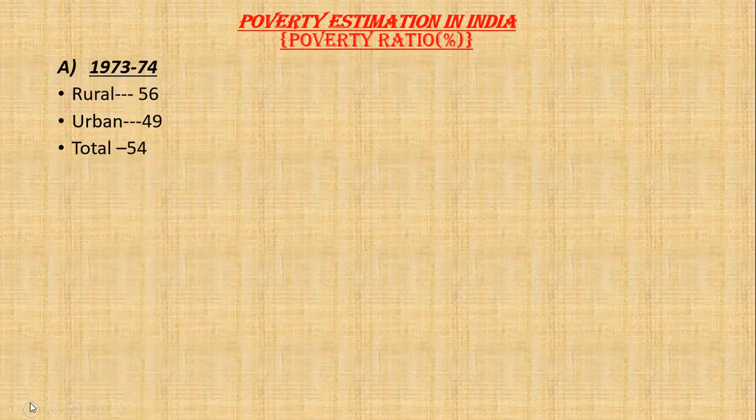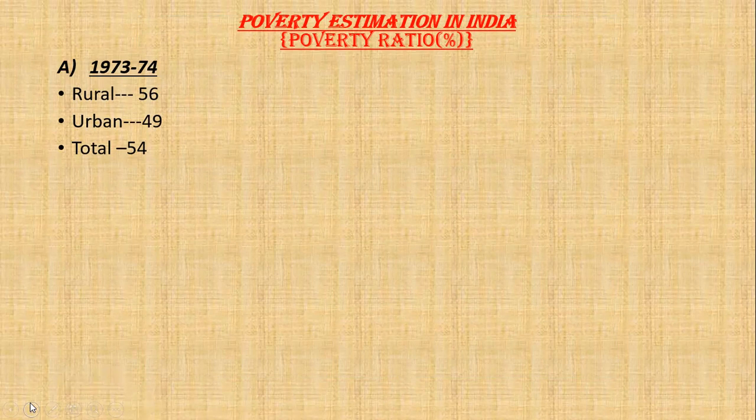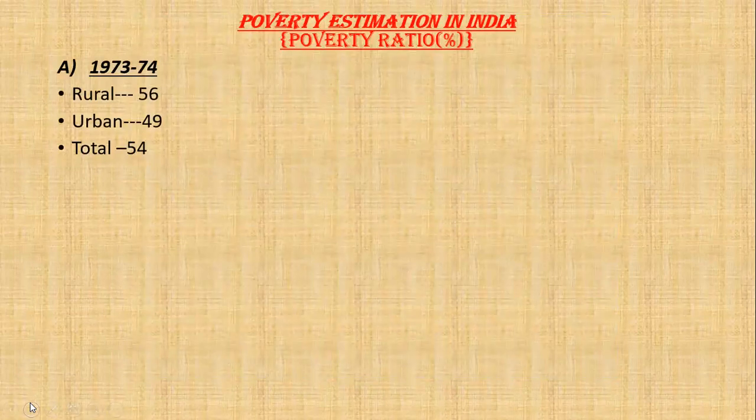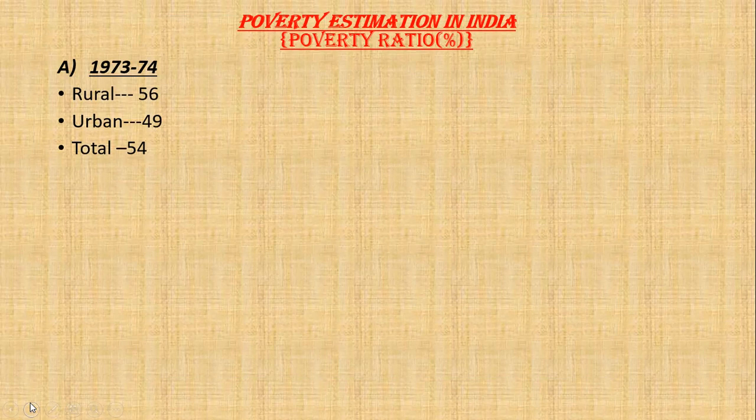So far, we have studied about poverty — that it covers basic necessities of life which a person cannot meet. We also studied about the poverty line, that it is an imaginary line through which we estimate poverty. People who fall below that line are poor and above that line are non-poor. We have also seen that there are many criteria, many dimensions, social indicators, and two levels: level of income and level of consumption.